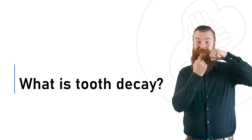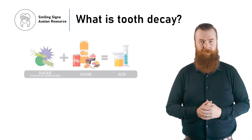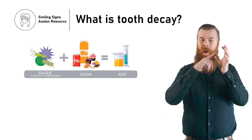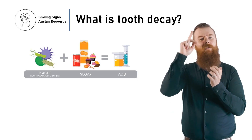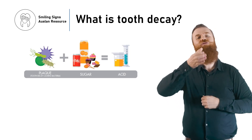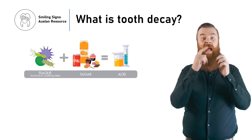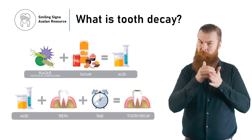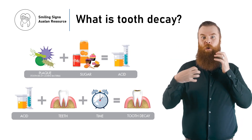So what is tooth decay? Millions of bacteria live in the mouth. These bacteria can form a sticky layer on the teeth called plaque. Sugar from foods and drinks feeds these bacteria. The sugar gives the bacteria energy to make acid. If the acid and plaque are not brushed away, over time they can cause tooth decay.